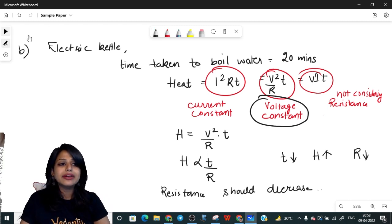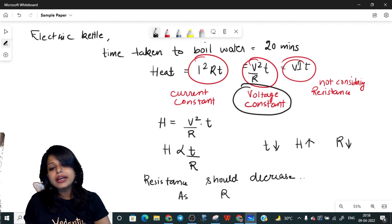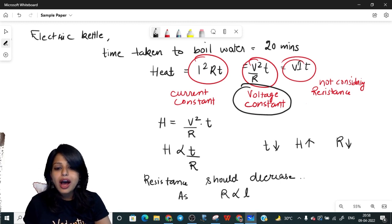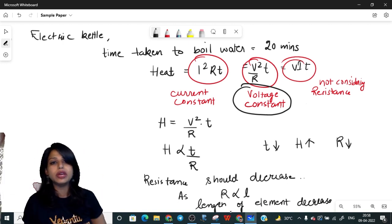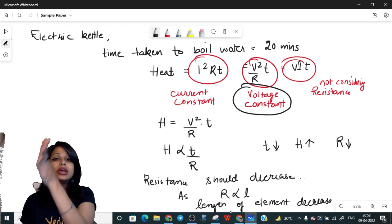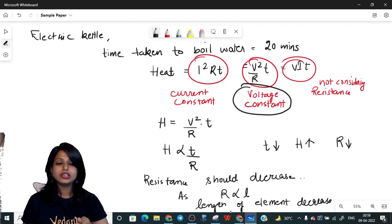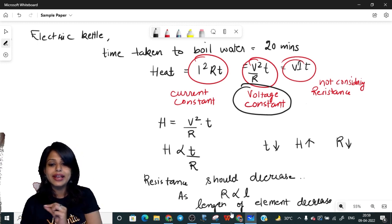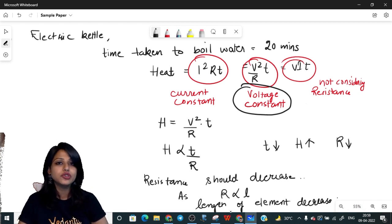If resistance should decrease, what about the length? You know that R is directly proportional to L. So for R to decrease, length of the electric kettle element should decrease. Hence this question, though it seems to be conceptual or confused to be numerical, is a mix. They're asking you to put the right formulation, look at the right relations and then use it. Every step is important, and that's how you get why the length of the element should decrease.